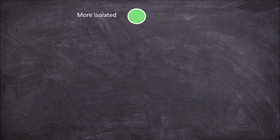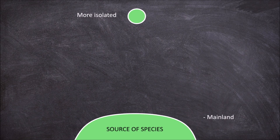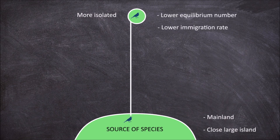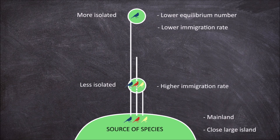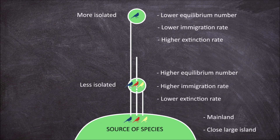Islands that are more isolated are further from the source of species. This source is often the mainland but can also be another larger island close by. More isolated islands have a lower equilibrium number due to a lower immigration rate, while those that are closer and less isolated have easier immigration and a higher equilibrium number. Extinction is also higher on more isolated islands, because species that are about to go extinct are more likely to be saved by repeated immigration on less isolated islands.